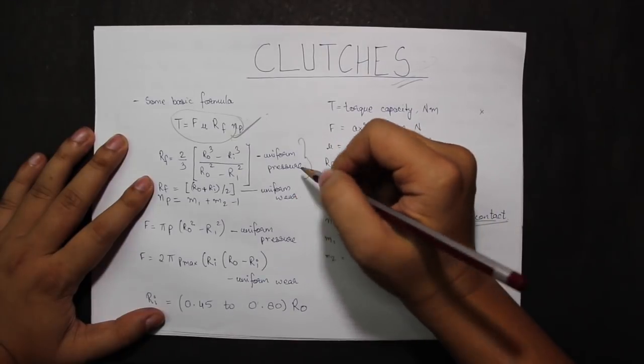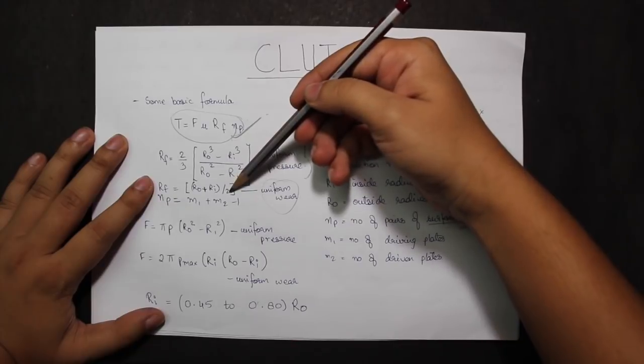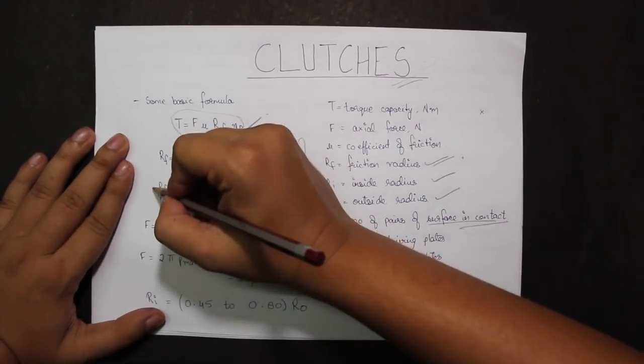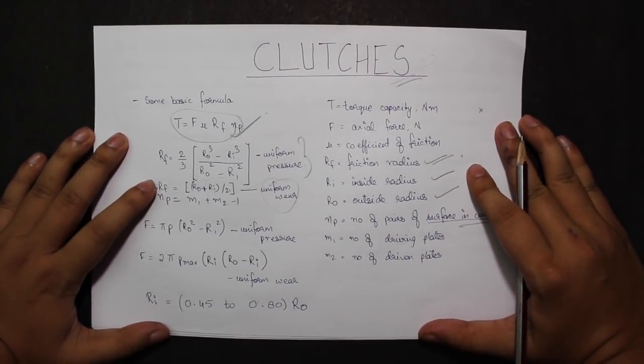For uniform wear, I have the value for RF as R0 plus RI divided by 2. I'll be using this value to calculate for the questions, assuming uniform wear.